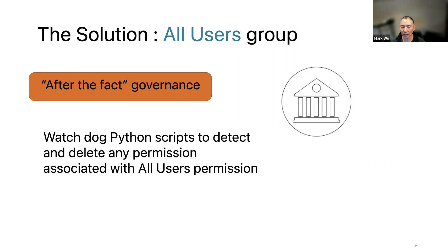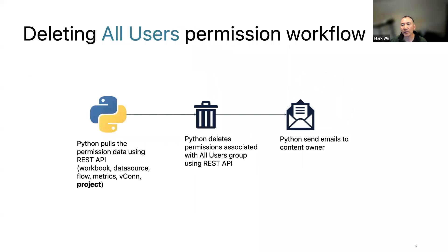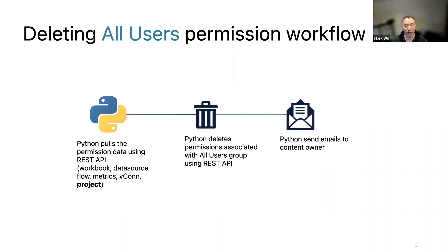I'll walk you through the steps. The flow is: first, pull the permission table using the REST API. Look at permissions on workbooks, data sources, flows, metrics, virtual connections, and projects — everywhere — to see if any permissions are associated with the All Users group. If yes, delete.